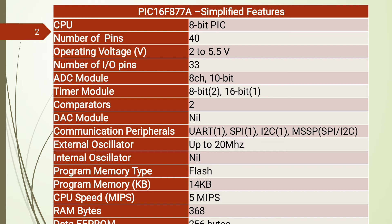The program memory used in PIC16F877A is Flash type with a capacity of 8 kilobytes. Flash program memory supports reprogramming multiple times, which is helpful for editing programs not yet finalized. The CPU speed is 5 MIPS — that is 5 million instructions per second. RAM size is 368 bytes and data EEPROM has 256 bytes capacity.